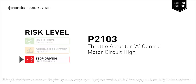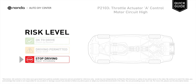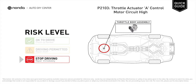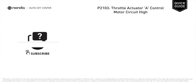P2103 is a diagnostic trouble code for throttle actuator A control motor circuit high. Under this circumstance, stop driving and repair your vehicle immediately. It means that the voltage signal of the throttle actuator A control motor circuit is higher than the specified range.